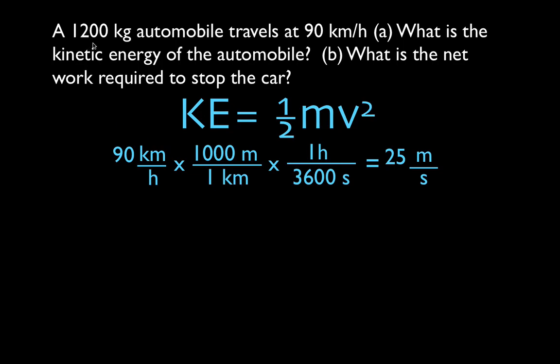And we can calculate the kinetic energy. Pretty straightforward. Kinetic energy is one half, same thing as 0.5, times the mass times 25 squared, the velocity squared. We're going to square just the velocity. So this is one half times 1,200 times 25 squared.